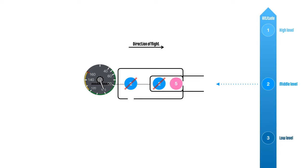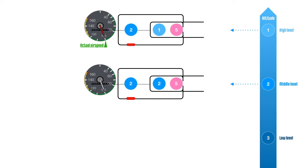But what if the static port gets blocked and the aircraft climbs to fly at a higher level where the static pressure is one unit? The static pressure in the case does not change because it's trapped inside by the blocked static vent.